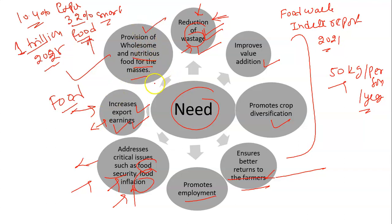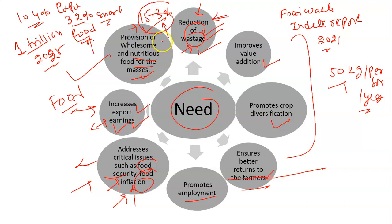If we consider the provision of wholesome and nutritional food for the masses, the prevalence of undernutrition among the total population in India was 15.3% during 2018 to 2020. This value has improved from previous years but is still high. If we make some changes in the food processing industry, we can give more nutritious food to our country.